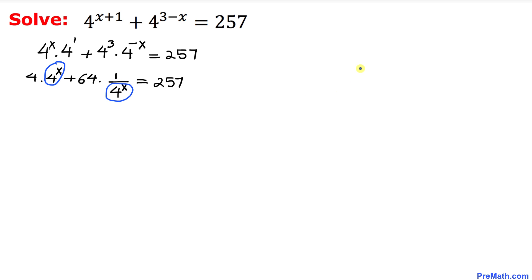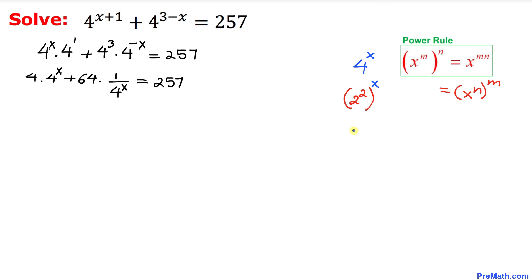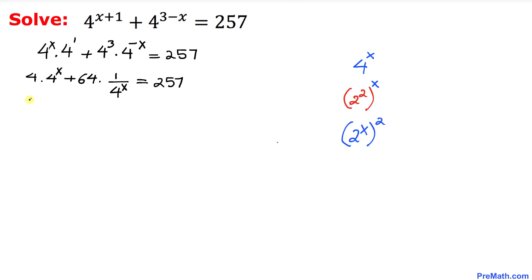Now let's focus on 4^x. We can write 4^x as (2^x)^2 by using the power rule. So we replace 4^x with (2^x)^2, giving us 4·(2^x)^2 + 64·(1/(2^x)^2) = 257.